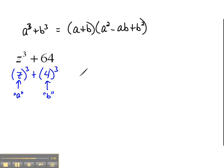So, we can use our pattern now. The pattern says, take a plus b, so that would be z plus 4. And, then it says, take the a value and square it. So, that would be z squared.